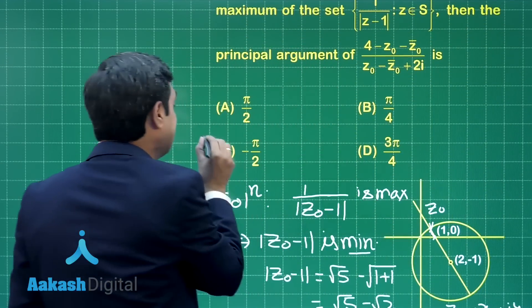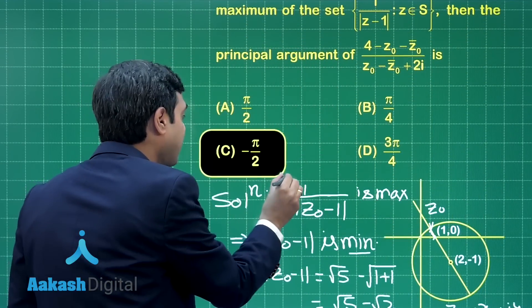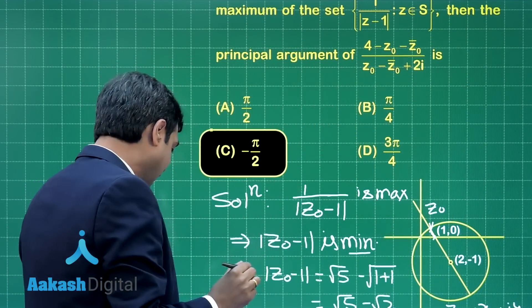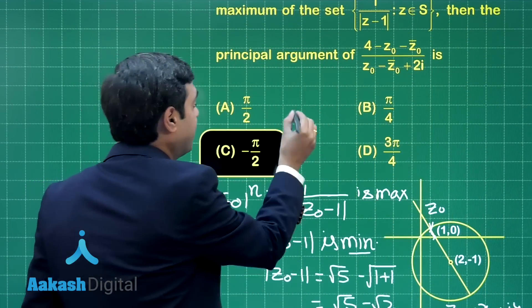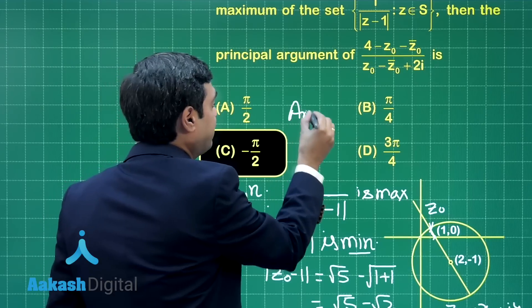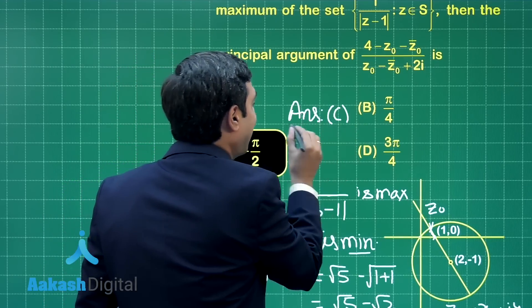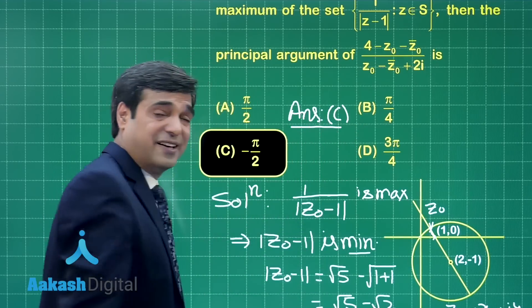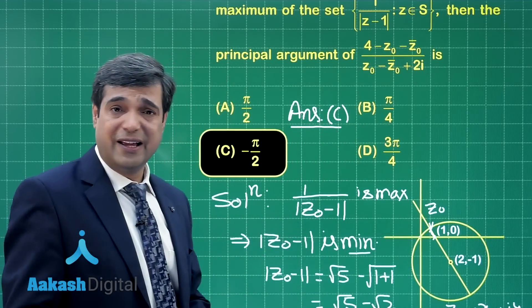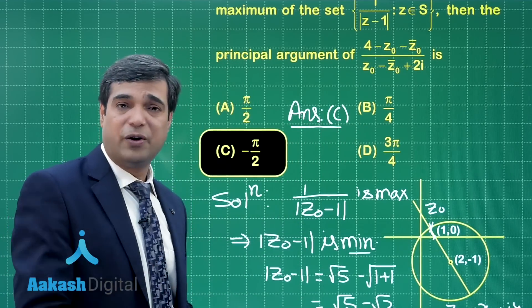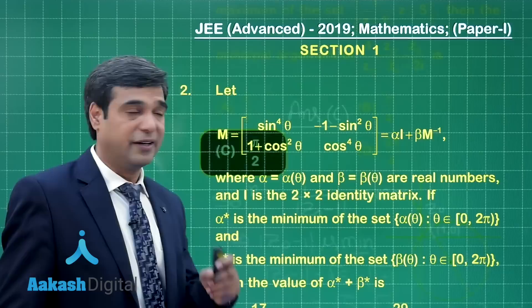Looking at the given options, the answer -π/2 is available as option number C. That is our correct answer. Let us move on to the second question.